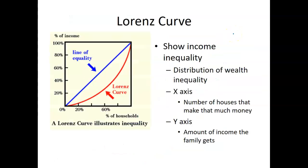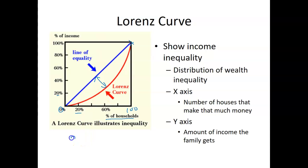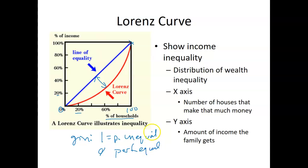The very last topic is the Lorenz curve. The line of equality is the 45-degree angle — if 20% of households are accounted for, they would have 20% of the income. Starting at zero and going to 100%, you account for 100% of the nation's income. The further the Lorenz curve is from the 45-degree line, the more income inequality there is. The Gini coefficient measures this gap: a coefficient of one means perfectly unequal, and a coefficient of zero means perfectly equal. I hope that helps — until next time, bye.